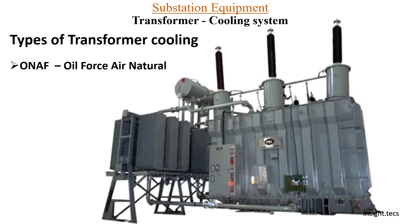An oil force air natural transformer will look like this — the radiators are given separately from the main tank. Through the pipes you can see the oil is being circulated using a pump. This is a higher rated transformer and in this kind of transformer you can see oil force air natural cooling system.